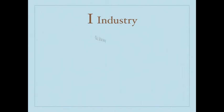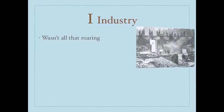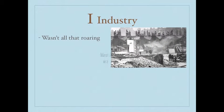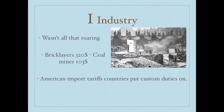First off was industry. Industry wasn't so roaring in the 1930s. As an average New York bricklayer might make $320 a month, coal miners would only make $103 a month. In response to American import tariffs on their products, many countries put custom duties on American goods, which reduced American exports.